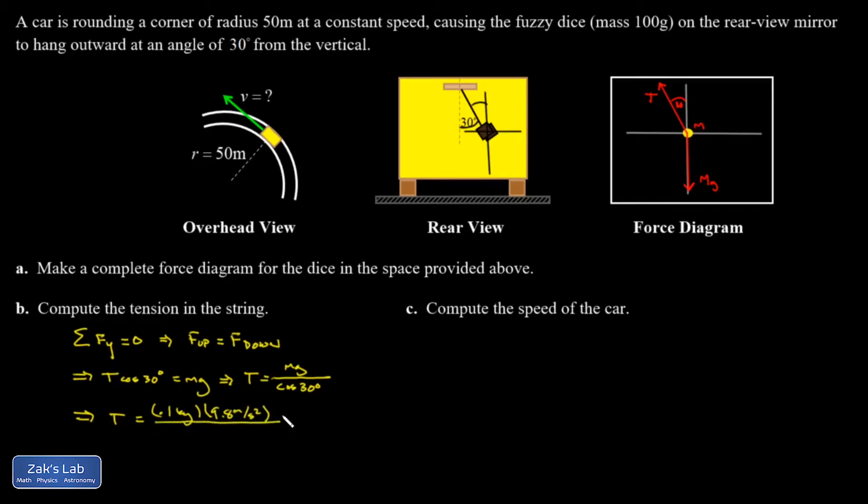The acceleration of gravity. And the cosine of 30 degrees in the denominator. And my tension comes out to 1.13 newtons.